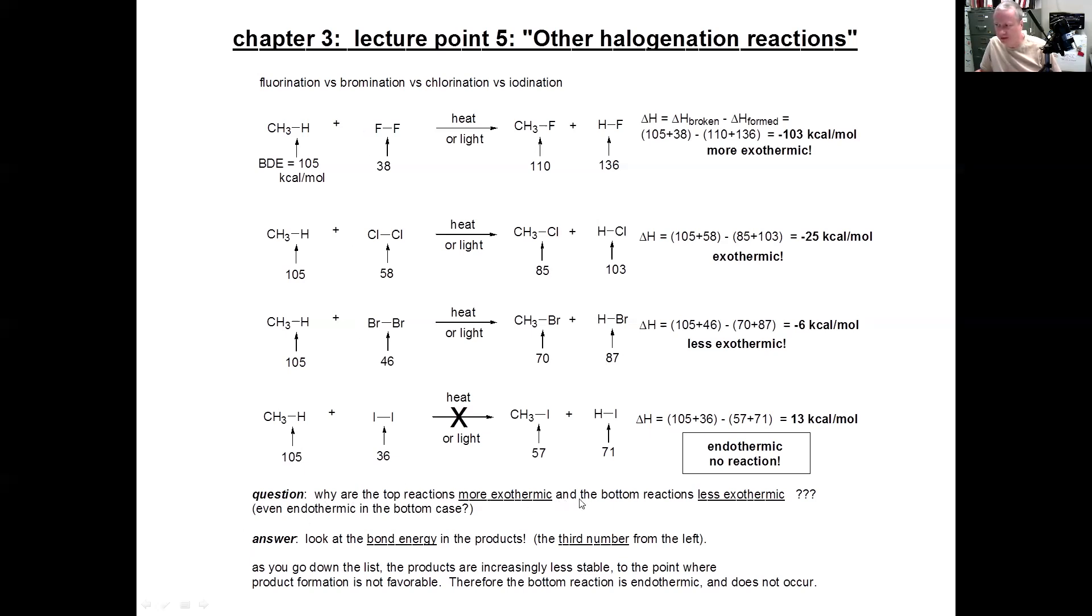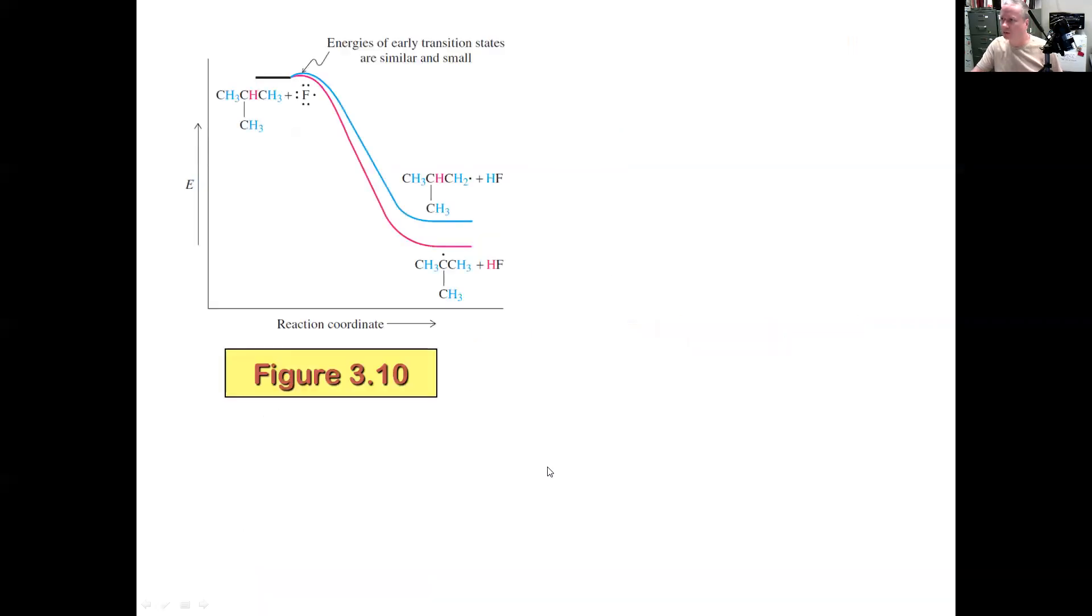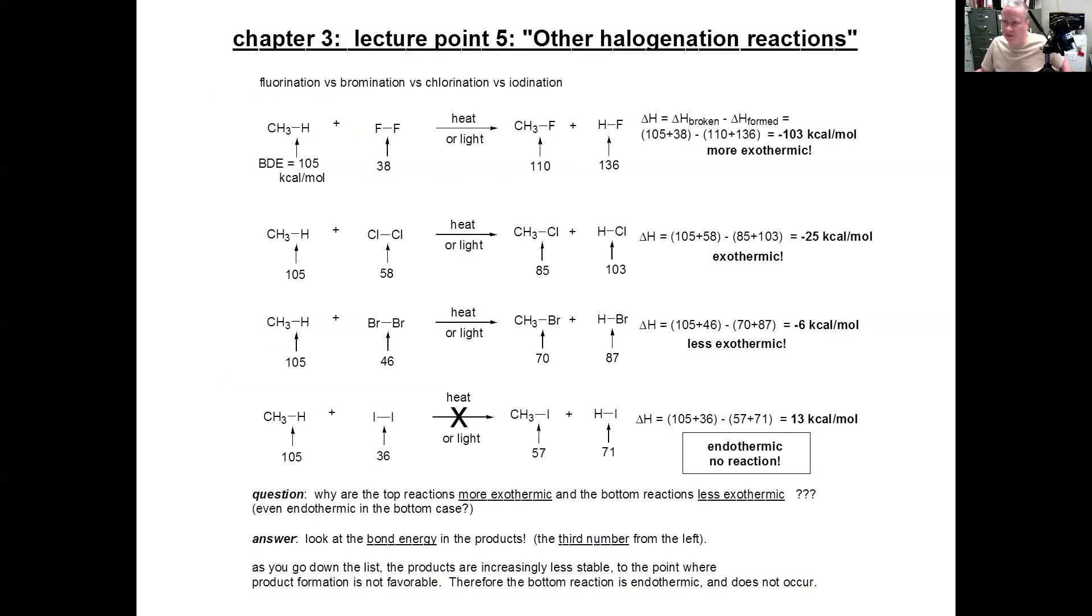So question: why are the top reactions more exothermic and the bottom reactions less exothermic? Well, we can discuss that. It has to do with the bond strength of the halogen and also the bond strength of the product, right? So the bond energy of the products—the third number. As you go down the list, the products are increasingly less stable to the point where product formation is not favorable for iodination.